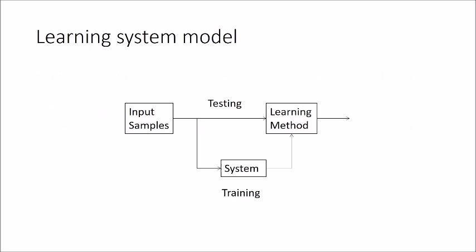Now, how does a learning model work in machine learning? There are two things to keep in mind while studying machine learning: training and testing. Training means you are training the model or system. After training the machine, you get a trained machine, which is then tested in the second phase.